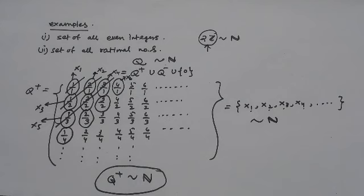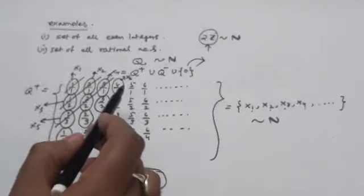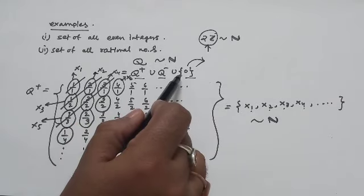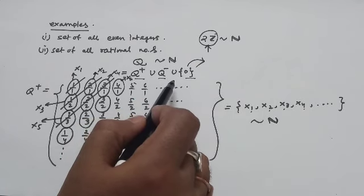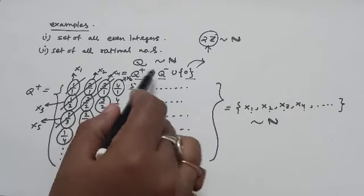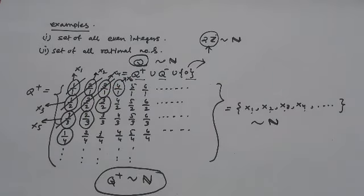Thus Q+ turns out to be a countable set. A similar approach applies to Q-. The singleton set {0} is a finite set. The union of countable set, countable set, and a finite set turns out to be a countable set — this is a property we will also study. Thus we have Q as a countable set.